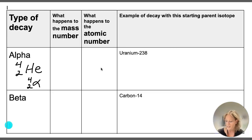So when an alpha decay occurs, you're going to have that parent isotope, and then part of the nucleus, this alpha particle, comes out.